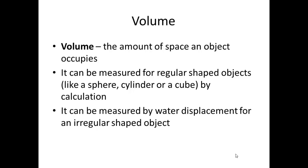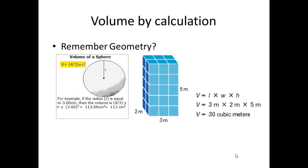Volume can also be measured by water displacement for an irregular shaped object. For a rectangular prism, you multiply the length times the width times the height. We're actually going to be using this formula today in class — nothing very complicated, but we're going to measure the volume of a couple of objects.